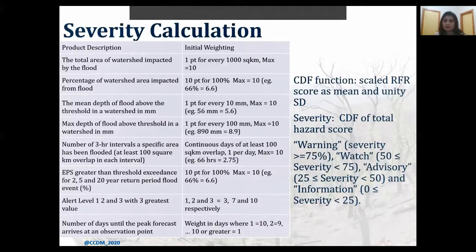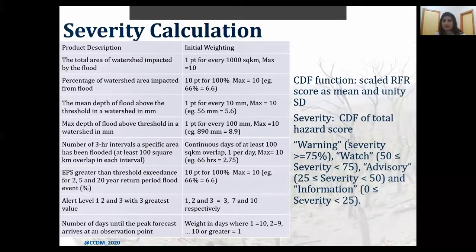The severity value is then the cumulative distribution function (CDF) of the hazard score, using a log-normal distribution with scaled driven risk as the mean and unit standard deviation. Flood alerts for affected watersheds are created based on the severity score. For example, if severity is greater than 75%, a warning alert is created; if greater than 50% and less than 75%, a watch; if greater than 25% and less than 50%, advisory; and so on.